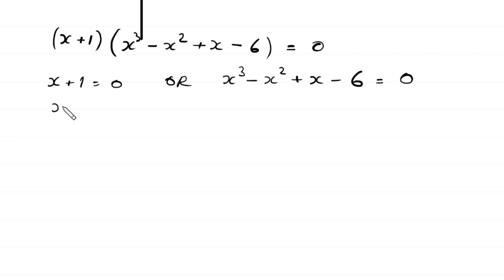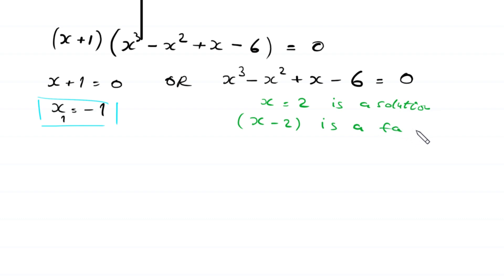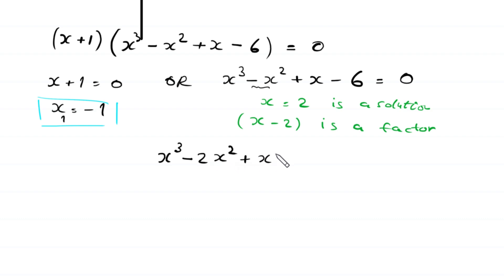From here, either x plus 1 equals 0, giving us x equals negative 1 as the first solution, or x cubed minus x squared plus x minus 6 equals 0. To find the other three solutions we solve this cubic equation. We notice that x equals 2 is a solution, which means x minus 2 is a factor. We rewrite this cubic equation.